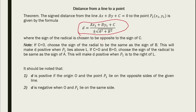The sign of the radical is chosen to be opposite to the sign of c. Note: if c = 0, choose the sign of the radical to be the same as the sign of b — this makes d positive when P₁ lies above the line. If c = 0 and b = 0, choose the sign of the radical to be the same as the sign of a.